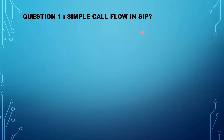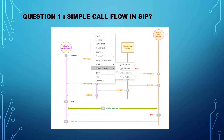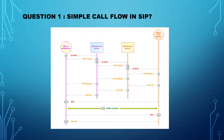The first question would be: what is a simple call flow in your SIP environment, like how the call flow works in SIP? Let me show you with the help of an example. Here you can see Alice's soft phone, the proxy server atlanta.com, biloxy.com, and Bob's IP phone. If somebody asks what is a simple call flow, you can imagine there are only two parties — Alice's soft phone and Bob's IP phone.